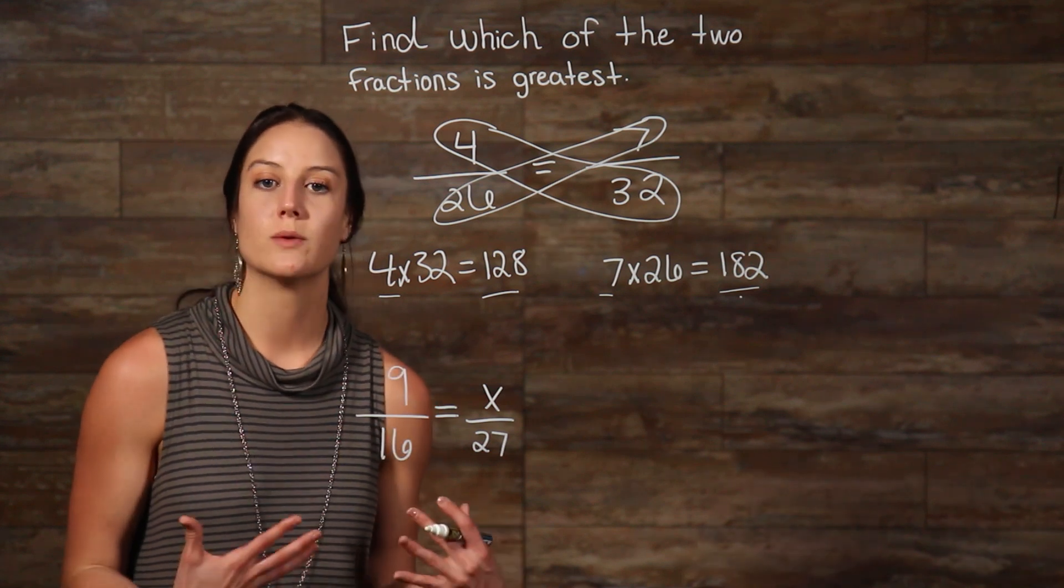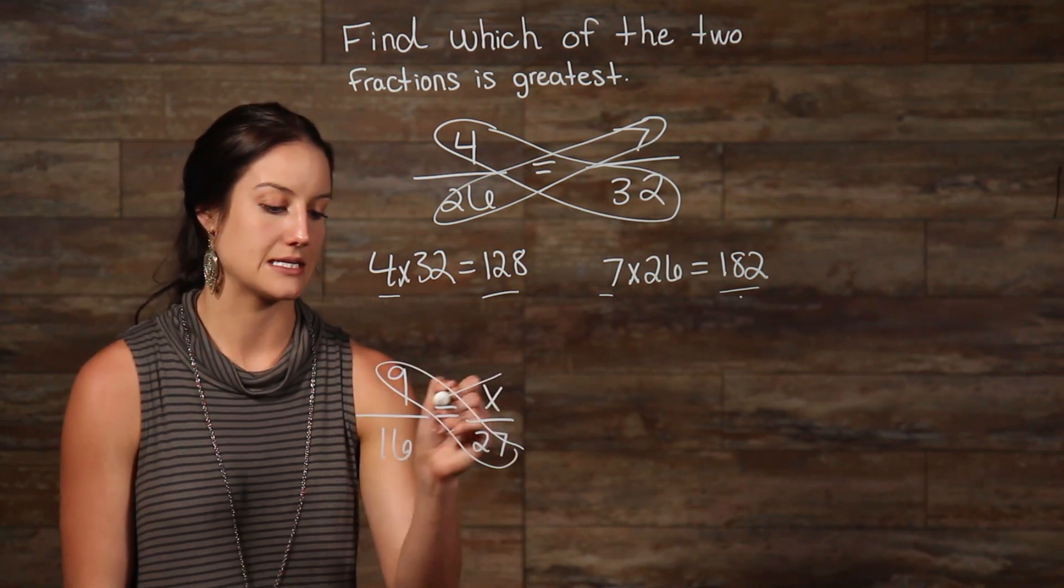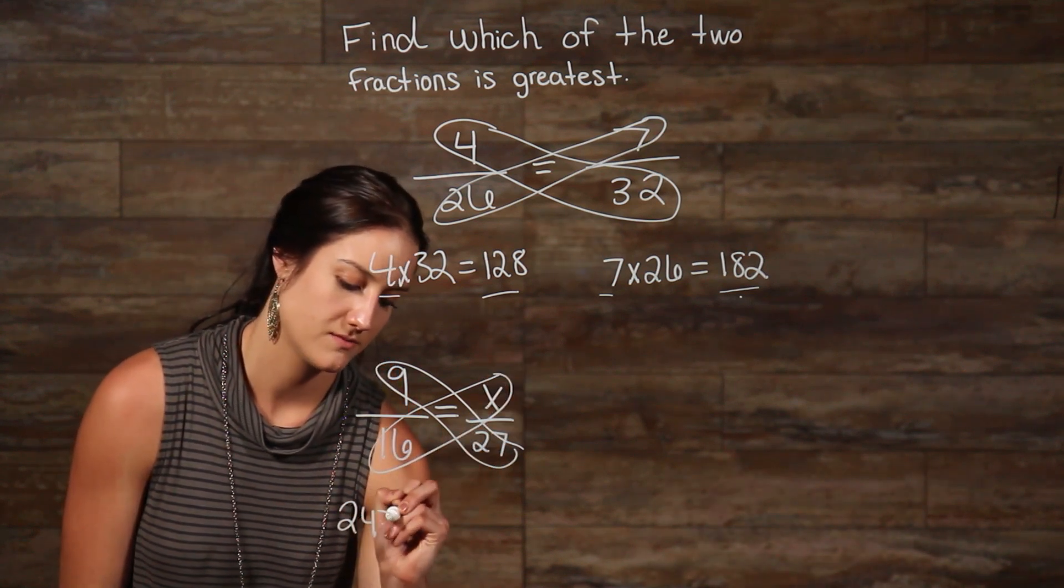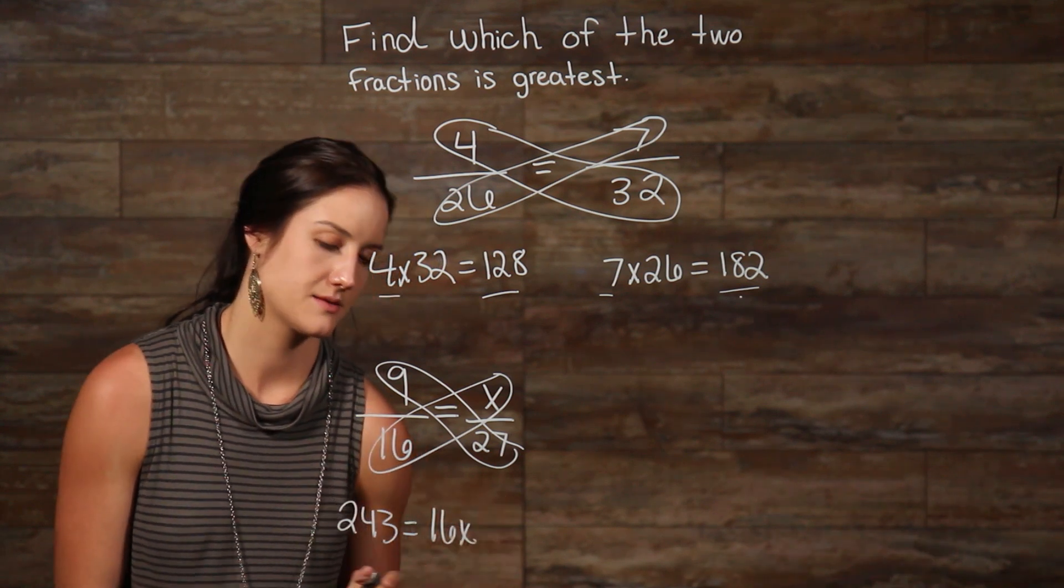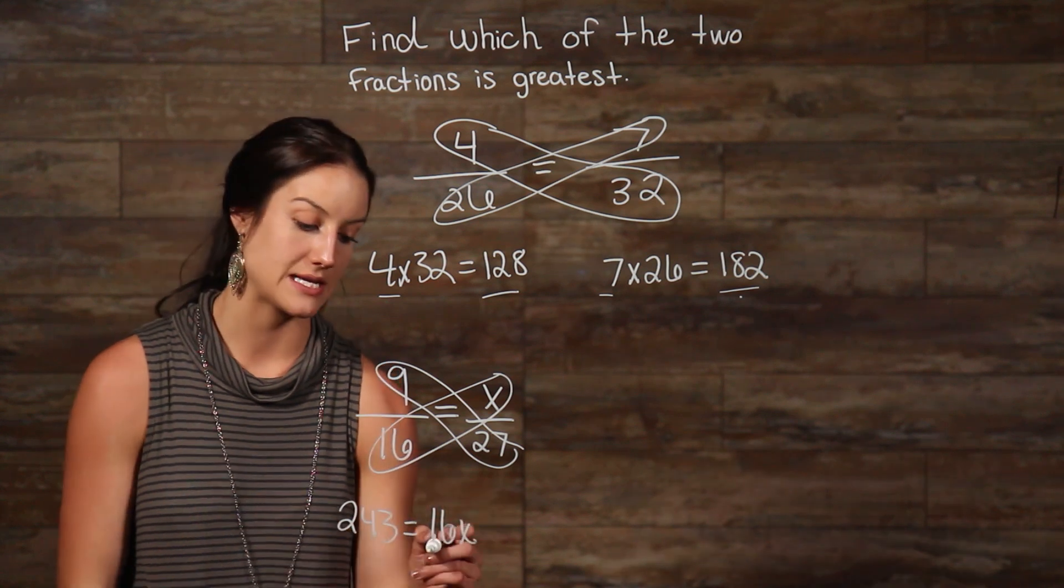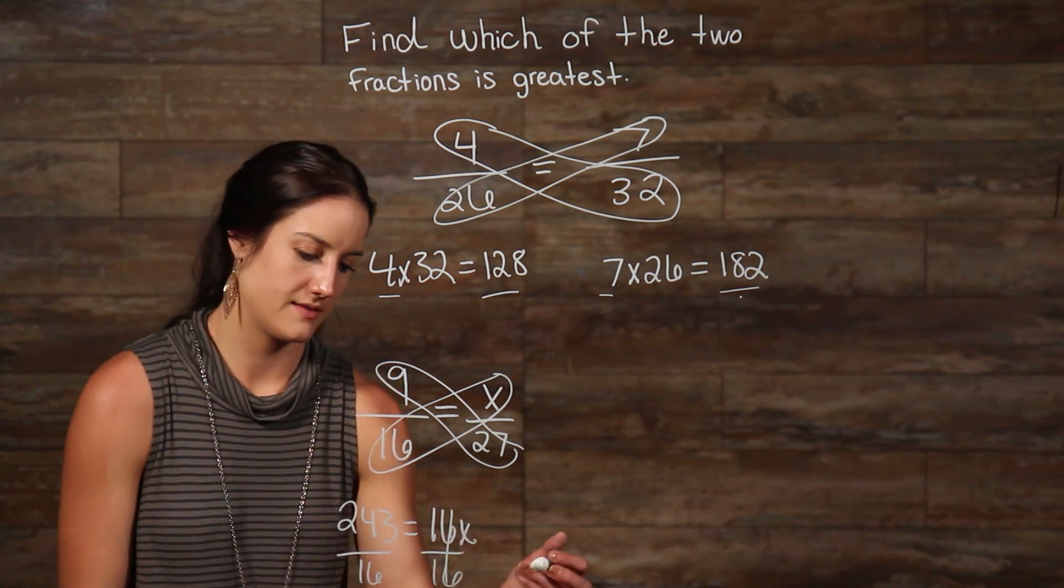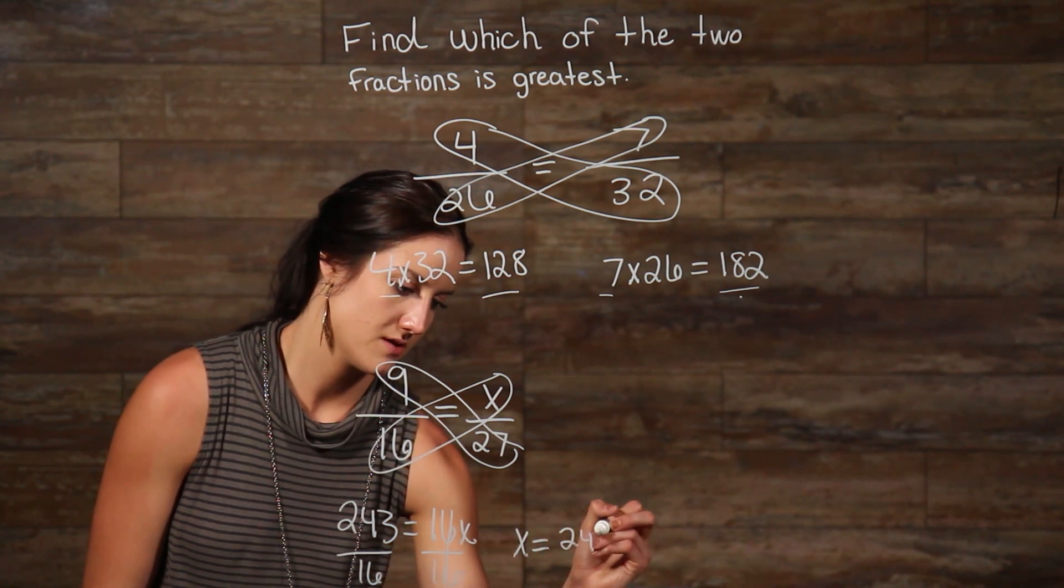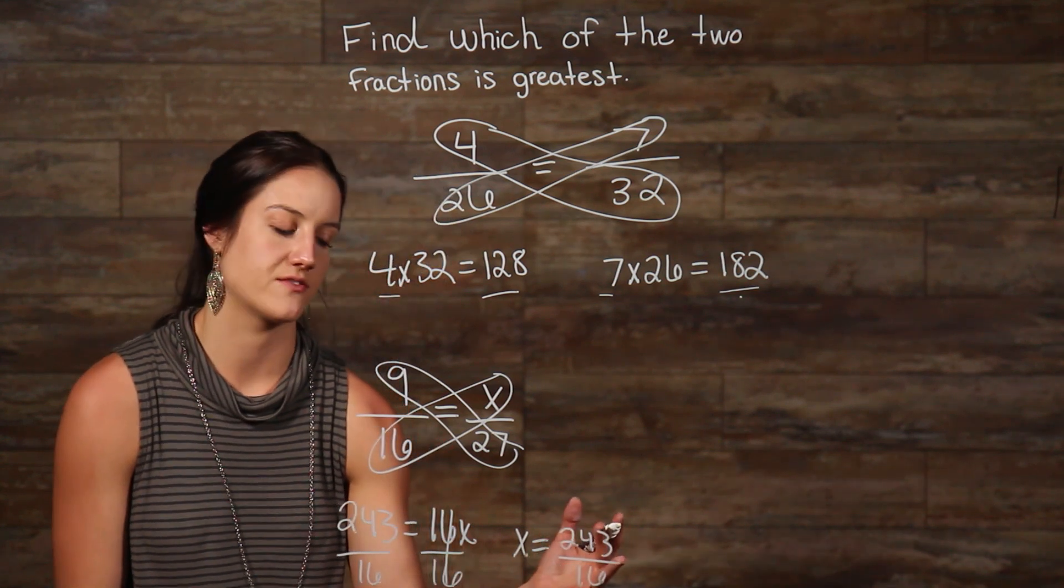In this case, we multiply 9 times 27 and 16 times our x. This would give us 243 is equal to 16x. Now, all we have to do to get x by itself is divide both sides by 16. This cancels out, and this gives us x is equal to 243 over 16, and you can simplify this even further.